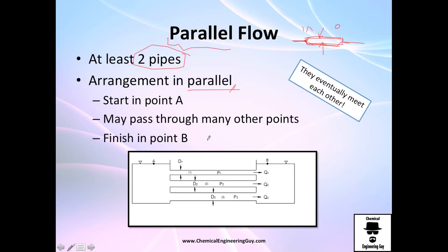The arrangement in parallel flow is that they start in point A. They must pass through these tubes—let's name them 1, 2, 3, or use lowercase a, b, whatever notation you want to choose. Just make the difference that these are not the same as these flows.